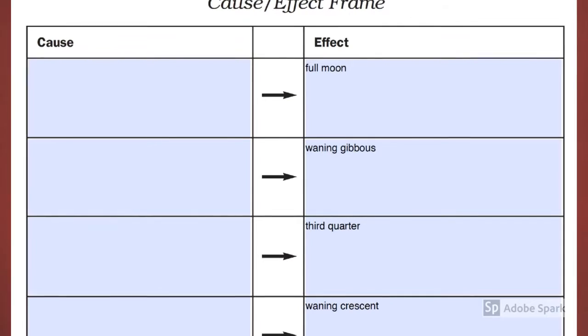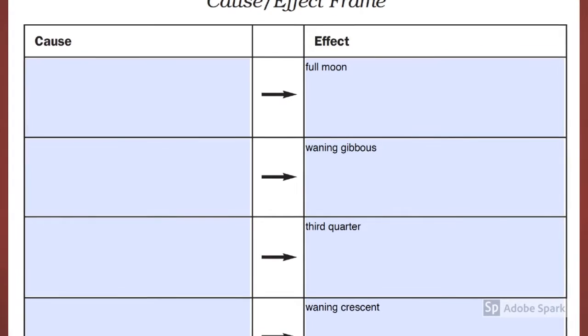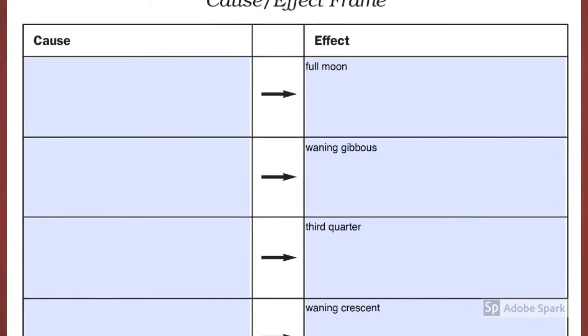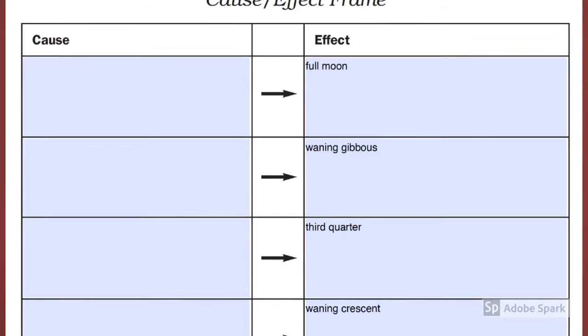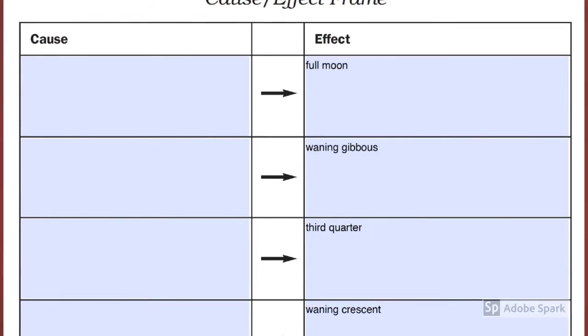Students can have a lesson on the actual cause of the different phases of the moon. They can then fill out a cause and effect frame to describe what causes each and every phase that the moon goes through.